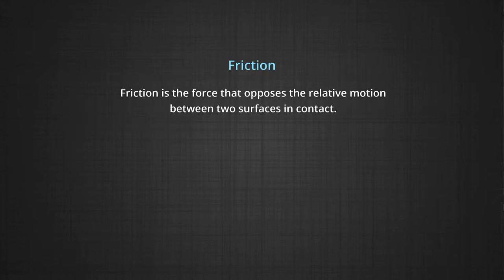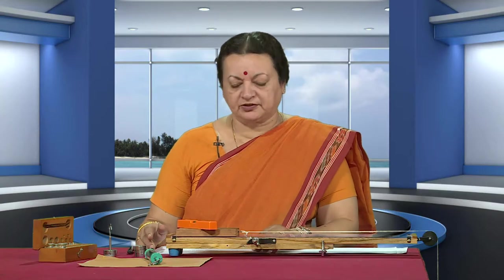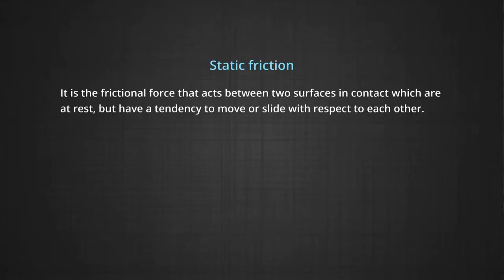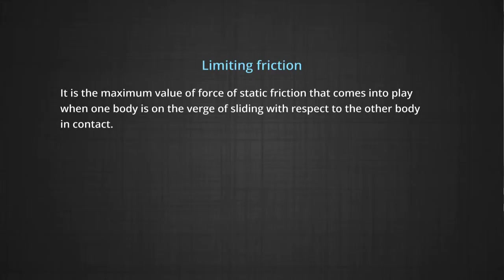Friction is the tendency to oppose the relative motion between two surfaces in contact. Static friction is the frictional force acting between two solid surfaces in contact at rest but having a tendency to move or slide with respect to each other. Limiting friction is the maximum value of force of static friction when one body is on the verge of sliding with respect to the other body in contact.